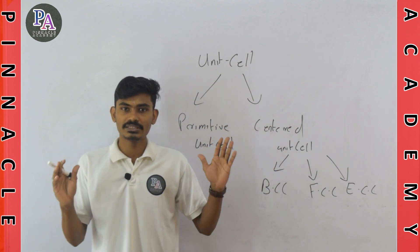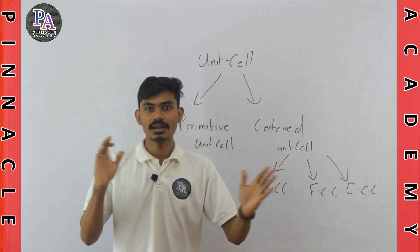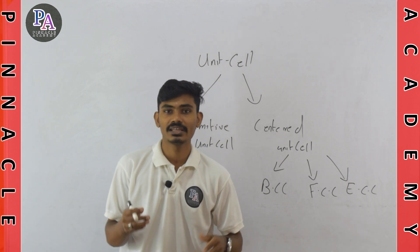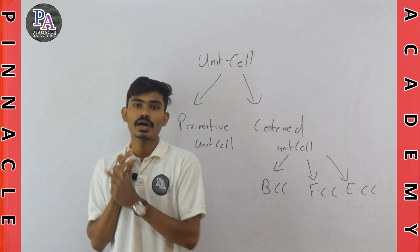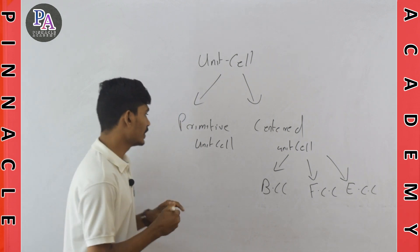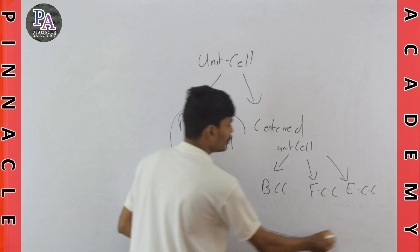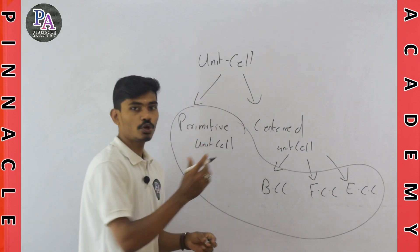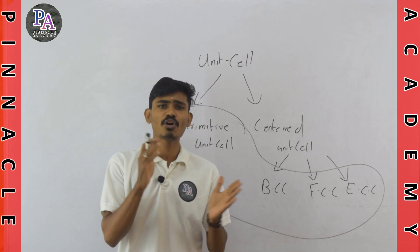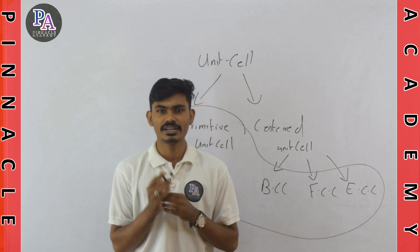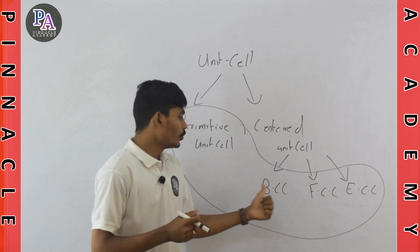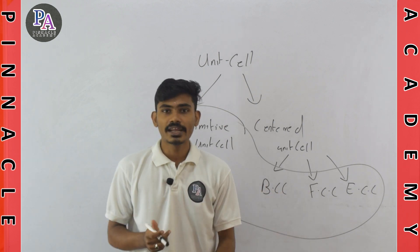The next topic is the number of constituent particles in the unit cell. If we have four types of unit cell, there are different numbers of constituent particles. We have to calculate the number of atoms in each unit cell.